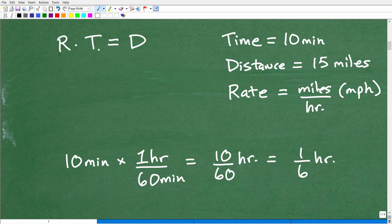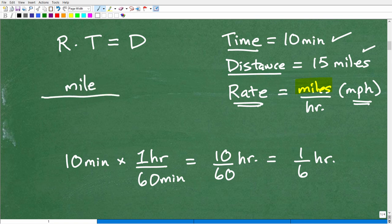All right. So here is our formula rate times time is equal to distance. Now let's take a look at our information. So we have the time. The car traveled is 10 minutes. So let's just write this down for a second. Distance, it went 15 miles. And then of course, I want to know the rate. That's the question, the speed, right? But I want to know the speed in terms of miles per hour.